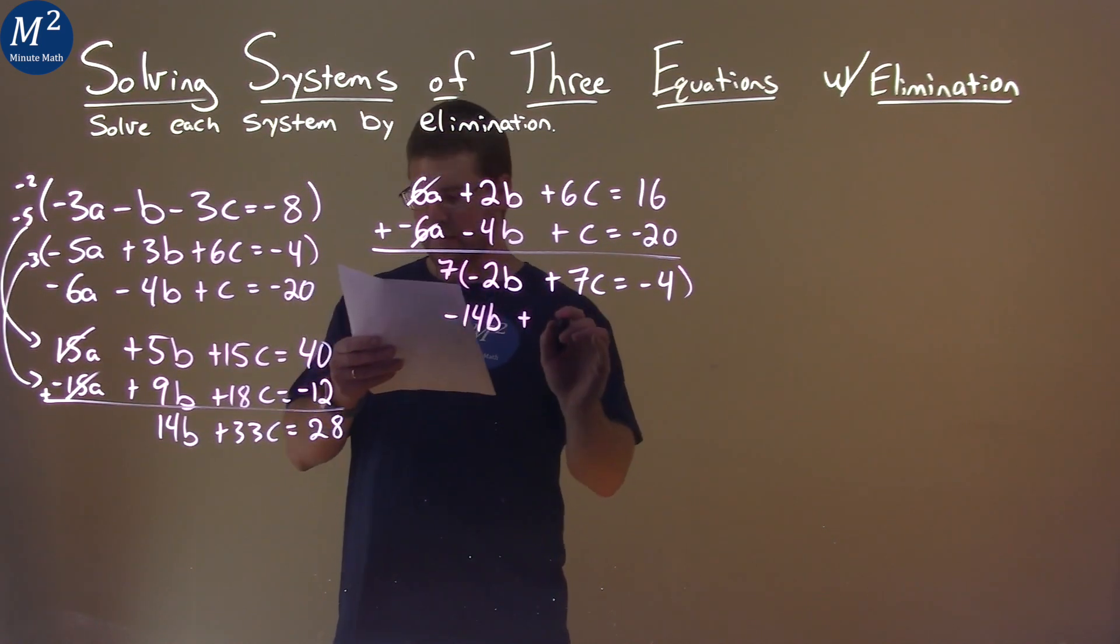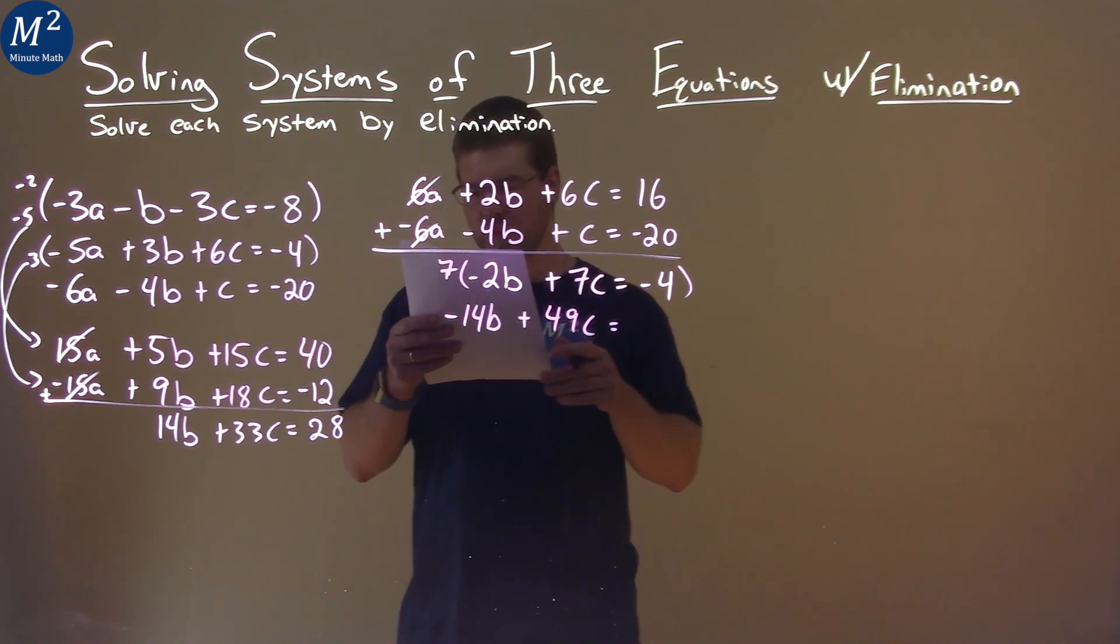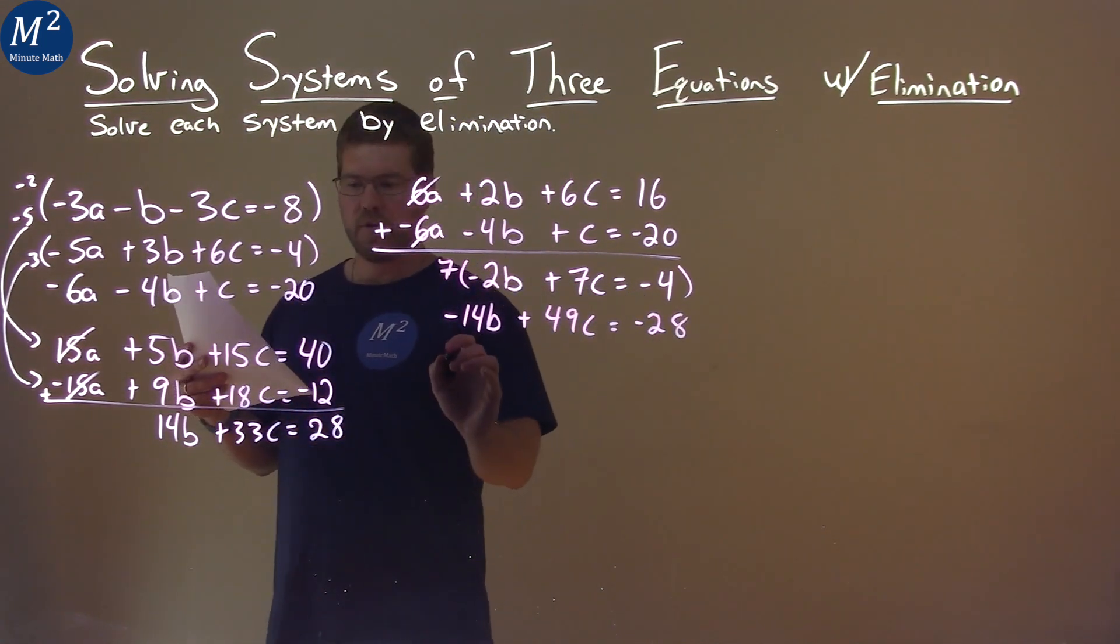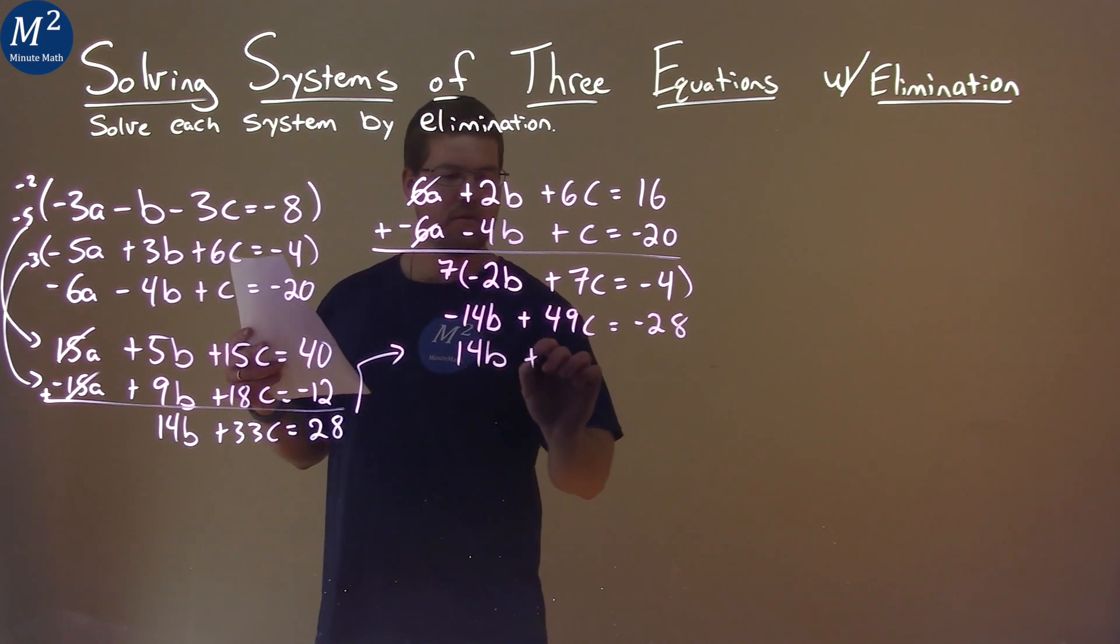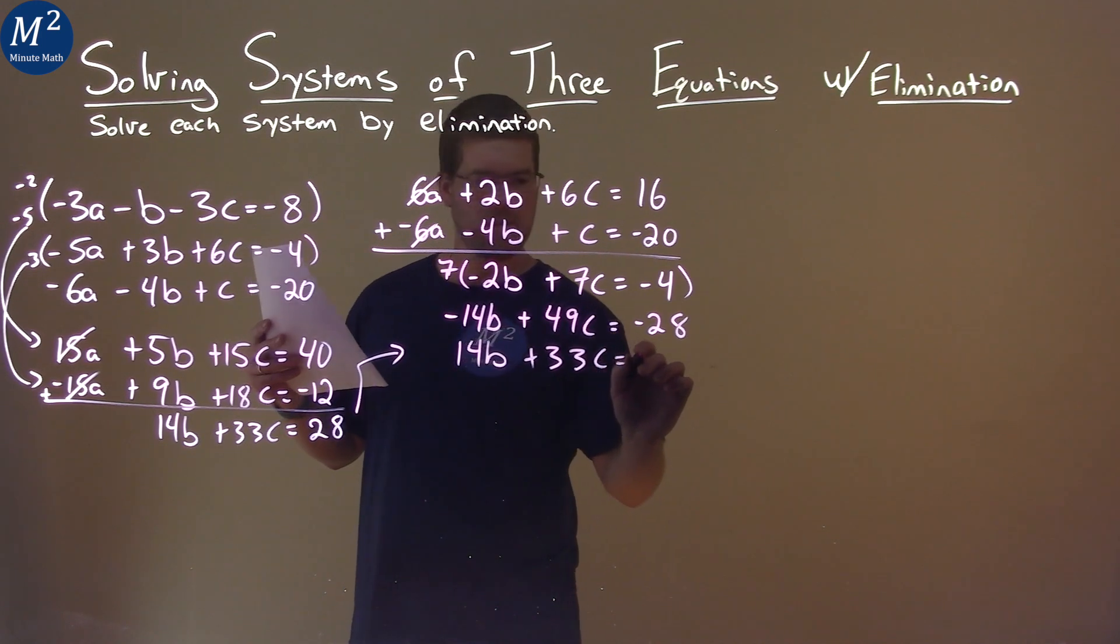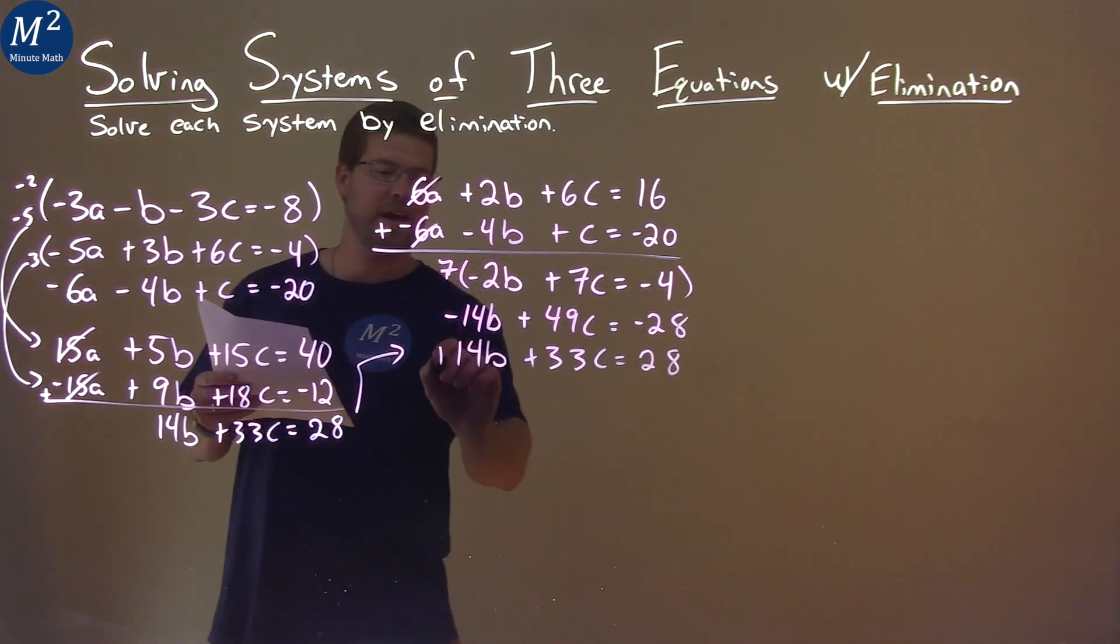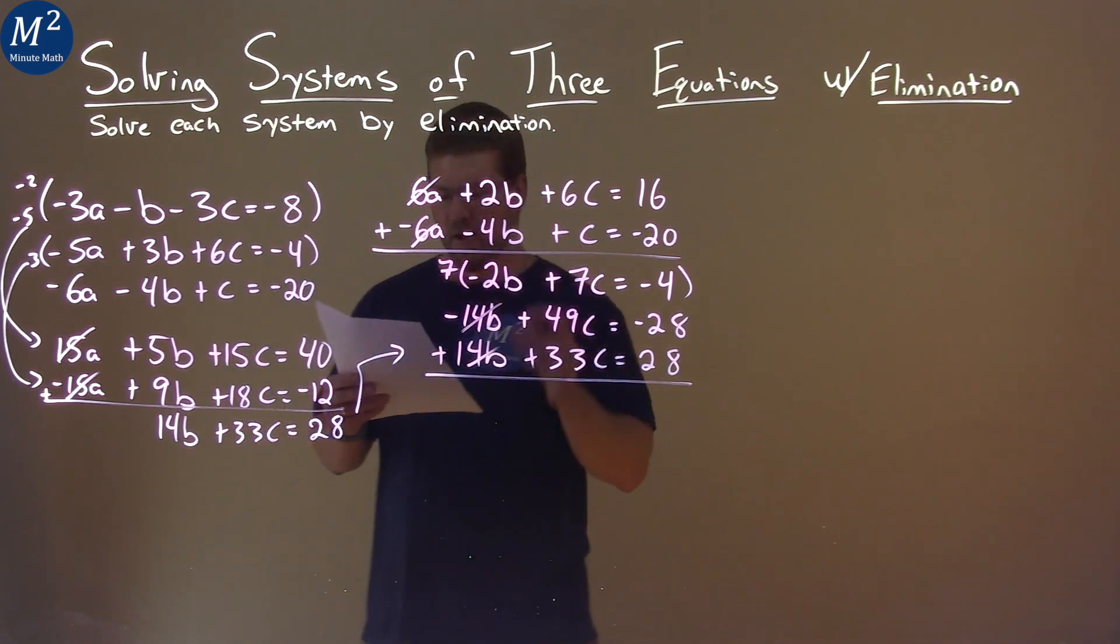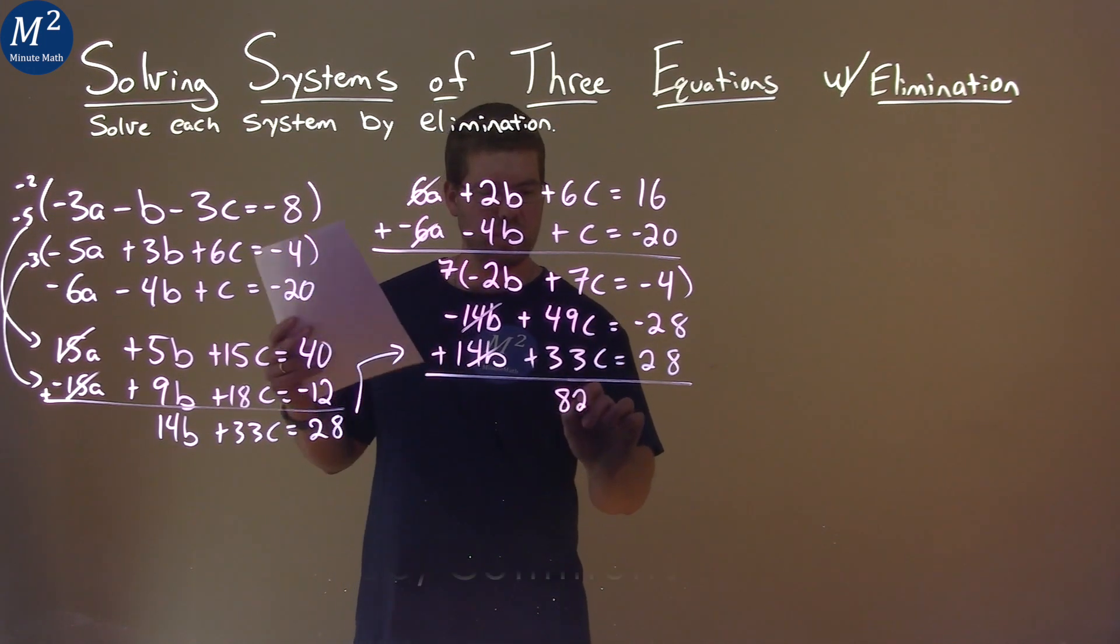7 times 7c is 49c, and 7 times negative 4 is negative 28. Bring this over here, and we have 14b plus 33c equals positive 28. Now we can add the two equations. The b's cancel. 49c plus 33c is 82c.